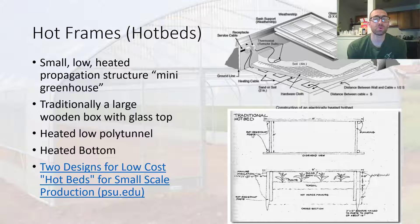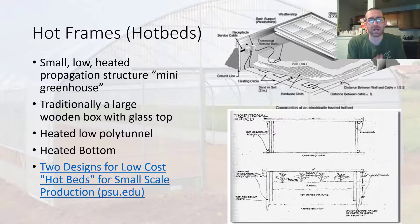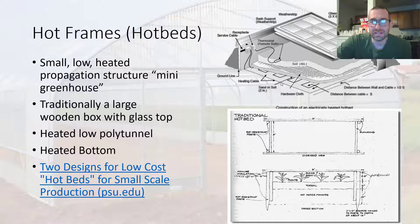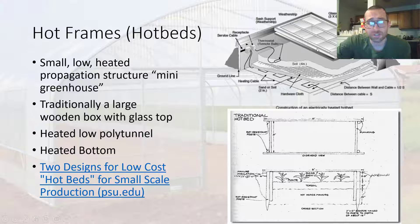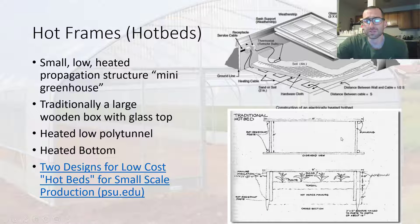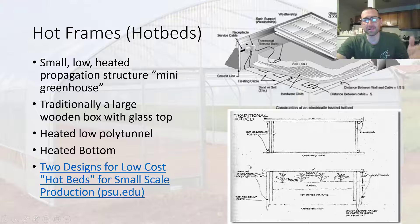Now we're going to move on to hot frames or hotbeds. These are essentially just mini greenhouses. Traditionally they were a wooden box with a glass top. What separates a hot frame from a cold frame is that hot frames have a heating element — typically a bottom heating element. That could be heated cables that run on the bottom of your hot frame, with some soil and then your plants on top. Or if you go traditional, you can use manure — horse manure is apparently ideal. You dig a trench, lay down horse manure, cover with topsoil, and plant on top. The entire thing is enclosed in a wooden structure with a glass or potentially poly top.